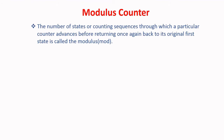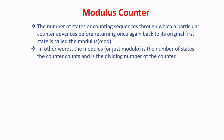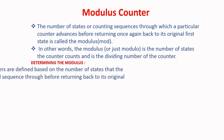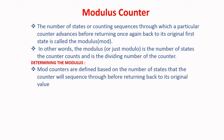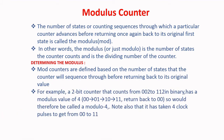Modulus Counter: the number of states or counting sequences through which a particular counter advances before returning to its original first state is called the modulus or mod. The modulus is the number of states the counter counts and is the dividing number of the counter. Mod counters are defined based on the number of states that the counter will sequence through before returning to its original value. For example, a 2-bit counter that counts from 00 to 11 in binary has a modulus value of 4 — that is 00, 01, 10, 11 — returning back to 00, and would therefore be called a modulus of 4.